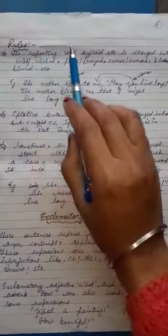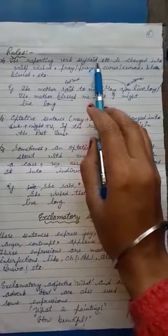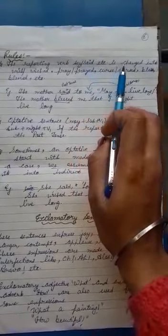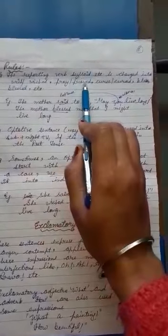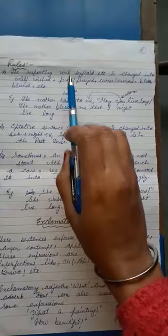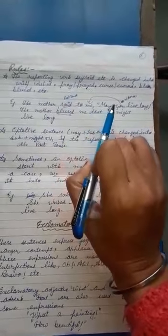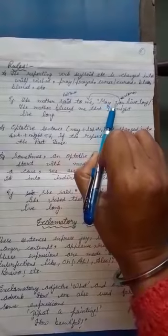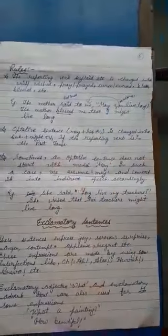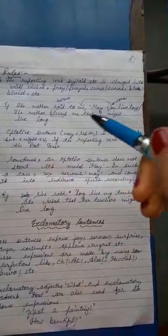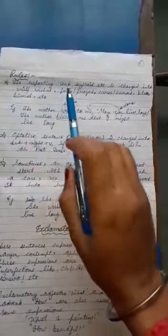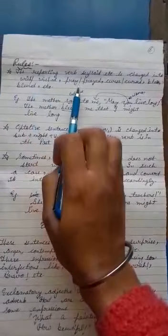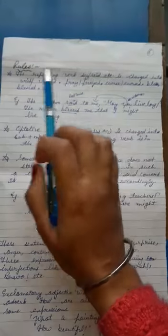First is the reporting verb say or said, etc. is changed into wish, wished, pray, prayed, curse, cursed, bless, blessed.